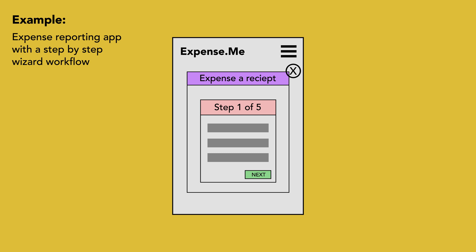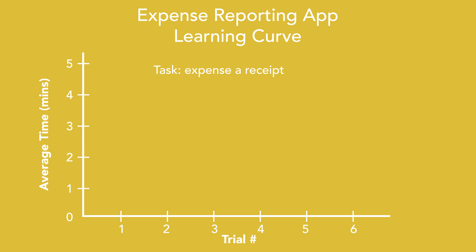With that being said, I want to point out that a learnable system is not always efficient. For example, let's imagine an expense reporting app with a step-by-step wizard workflow and a lot of instructions and explanation on how to expense a receipt. This system might be highly learnable in that users could successfully complete the task as fast as possible even as they do it for the first time. But if we were to produce a learning curve by plotting a user's time on task over a set number of trials, we would likely find the line to be pretty flat.